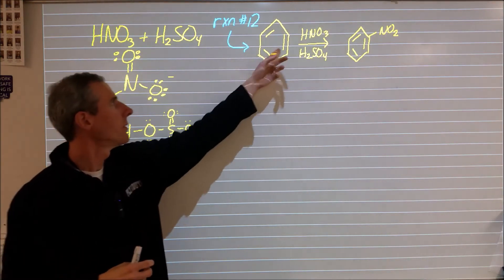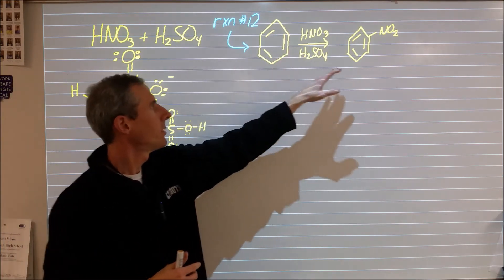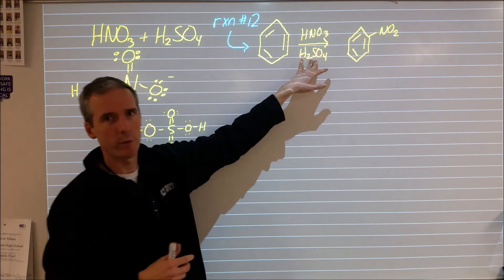Benzene is a really stable compound because of the resonance that it exhibits, and we're going to look at an addition to a benzene ring where we add a nitro group to it using concentrated nitric and sulfuric acids.